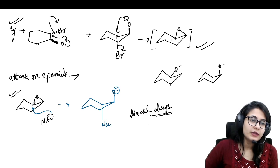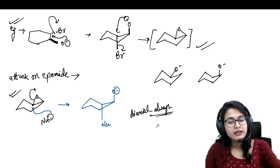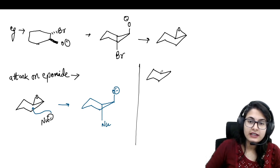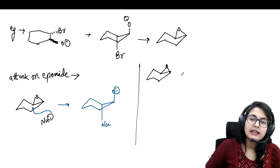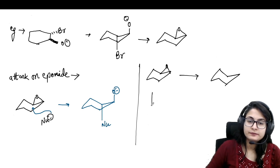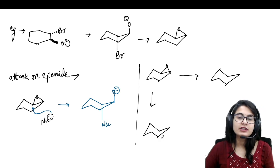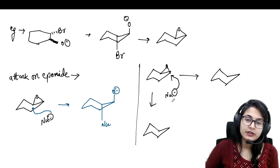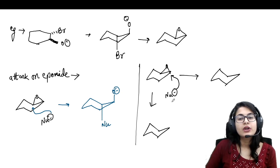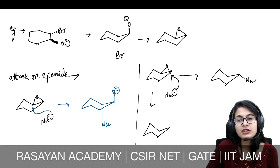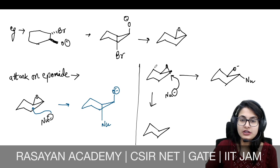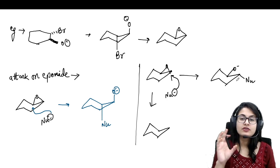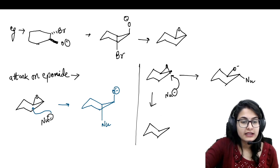Always remember: a three-membered ring opening — whether epoxide or aziridine — opens in such a way that you get the diaxial compound. Consider two possibilities for this epoxide formed above the plane. Draw two cyclohexanes and check: if the nucleophile is attacking from below (since the epoxide is above), the below position on this carbon is equatorial, not axial. So the diaxial compound is not formed from this pathway — the orbital interaction is not favorable.